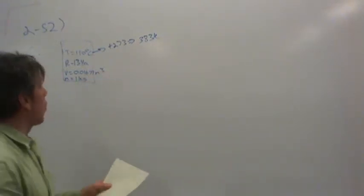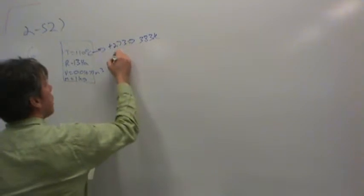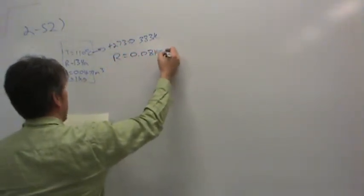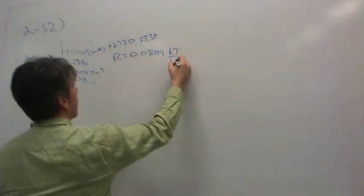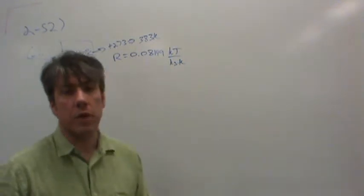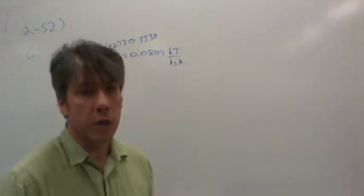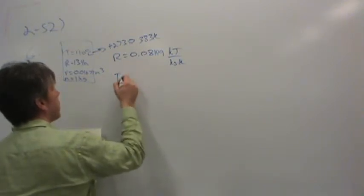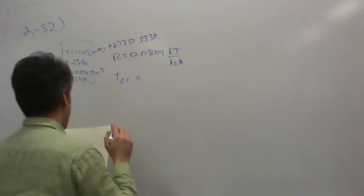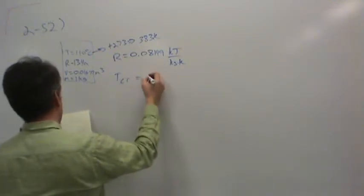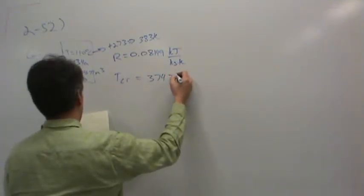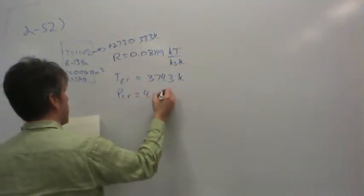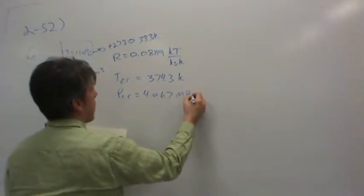If you look up some properties for R134A, you find that its gas constant R is 0.08149 kilojoules per kilogram per Kelvin. And since we're supposed to deal with generalized compressibility, we'll also need the critical pressure and temperature from the table in the back — the same page as the gas constant. The critical temperature is 374.3 Kelvin, and the critical pressure is 4.067 megapascals.